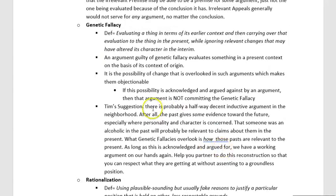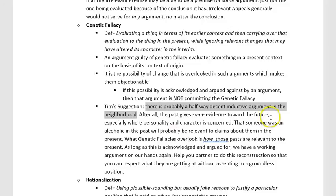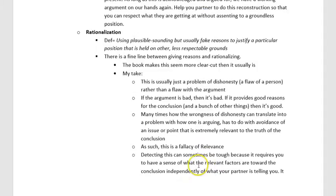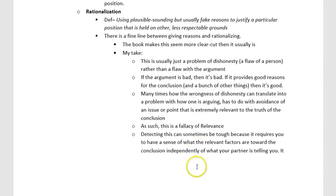Genetic fallacy is a very easy fallacy to fix — all you have to do is address the possibilities of change and think about whether those things happened. You just have to do more than what you were doing before. The past does give some evidence for the future, so there's probably a halfway decent inductive argument in the neighborhood — help your partner work with that.